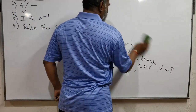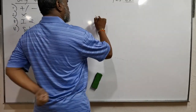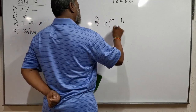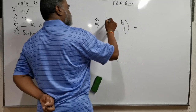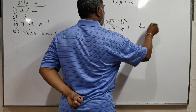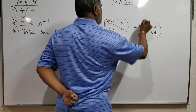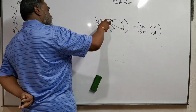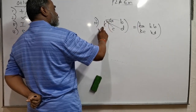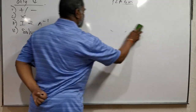The third concept under introduction: whenever they give a number outside a matrix, that number needs to be multiplied by each element inside. So k × [A, B; C, D] gives [kA, kB; kC, kD] — the number outside times each element inside the bracket.